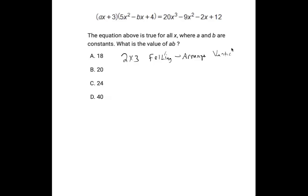When you do this, you'll be able to do something that's similar to long multiplication. So if we have 5x squared minus bx plus 4 multiplied by ax plus 3, we're going to first multiply everything by the 3.